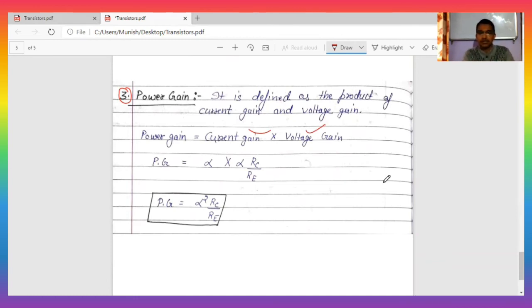So, current gain into voltage gain. Current gain is alpha, voltage gain is alpha RC by RE. So here alpha times alpha becomes alpha squared. So power gain is alpha squared times RC by RE. You can calculate it this way.